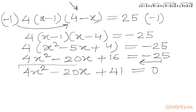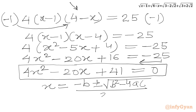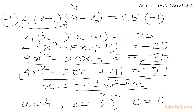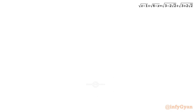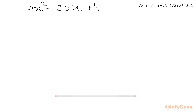This is a quadratic equation and we will use the quadratic formula. The formula is: x equals minus b plus or minus square root of (b² minus 4ac), all over 2a. Our equation is 4x² minus 20x plus 41 equals 0, where a equals 4, b equals minus 20, and c equals 41.